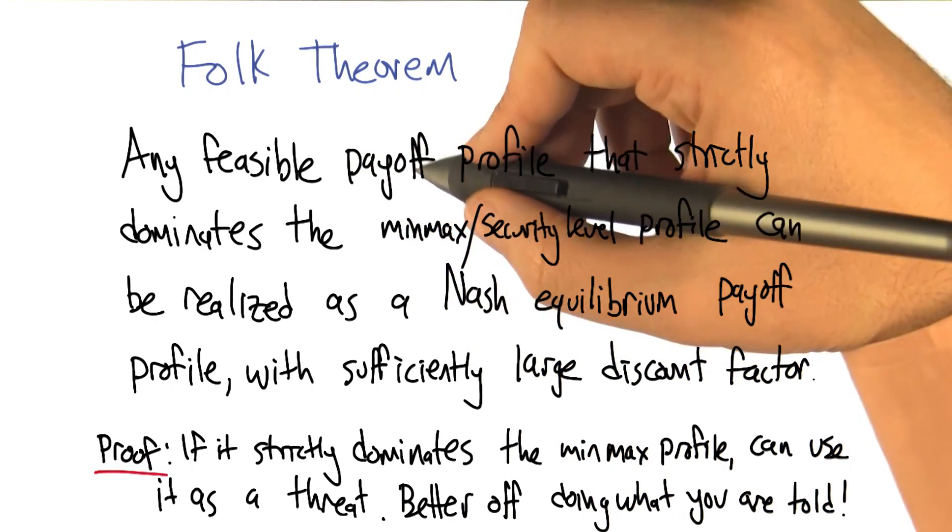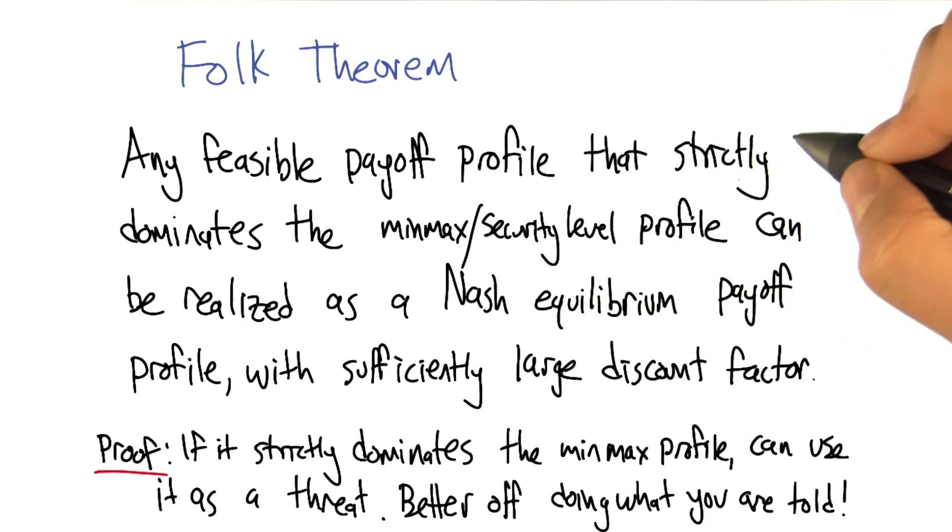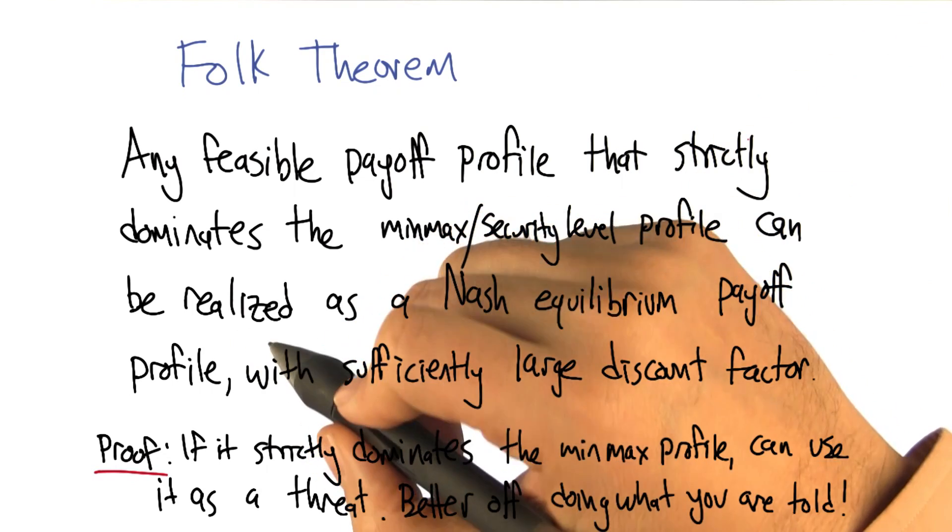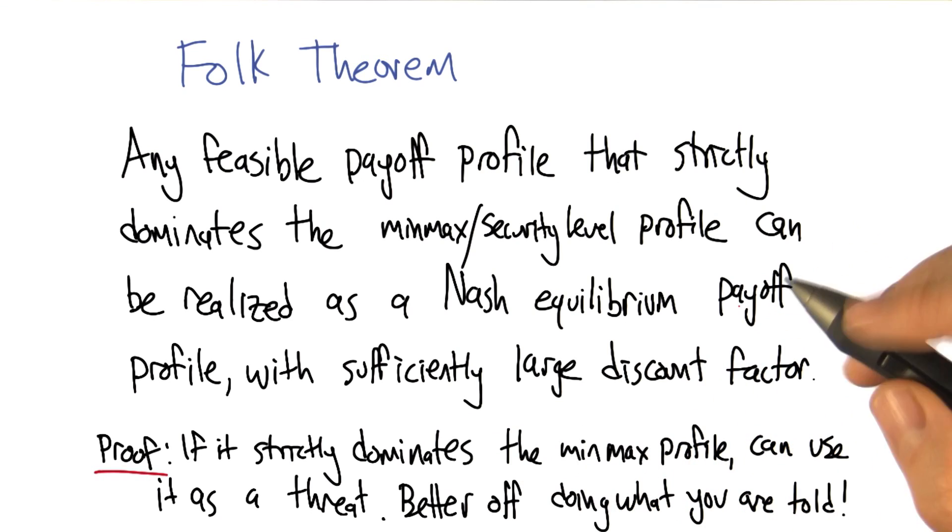So here's the folk theorem. Any feasible payoff profile that strictly dominates the minmax or security level profile can be realized as a Nash equilibrium payoff profile with a sufficiently large discount factor.